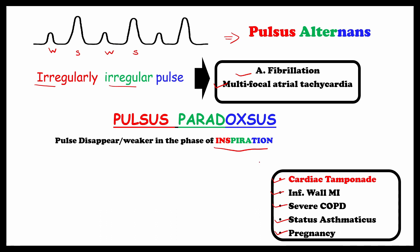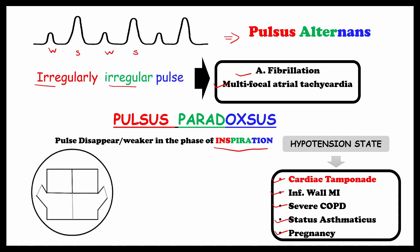All the conditions causing pulsus paradoxus involve a hypertensive state. Let's assume this represents the heart and its chambers, and this is the pericardial sac. During cardiac tamponade, the pericardial sac fills with fluid, making contraction difficult due to high pressure in the sac. During inspiration, blood filling in the right ventricle increases, causing exaggerated septal deviation. This decreases the left ventricular cavity, so end-diastolic volume decreases and blood pressure decreases.